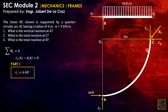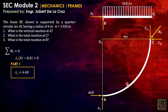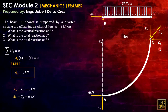A two-force member is a structural member not loaded between its body — only loaded at two points, with no forces or weight in between. The advantage: by equilibrium, the reaction at one end equals the reaction at the other end in magnitude. Therefore, the resultant reaction at A equals the resultant reaction at C, meaning RA equals RC.